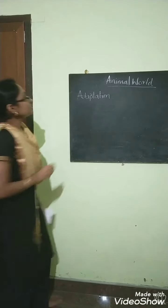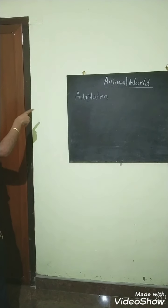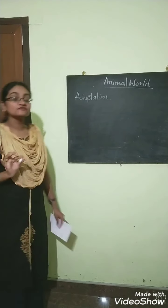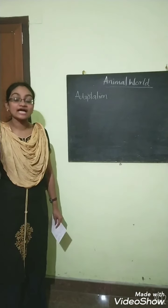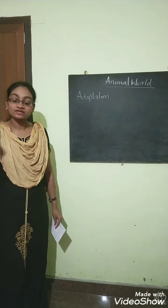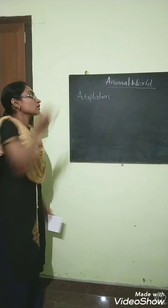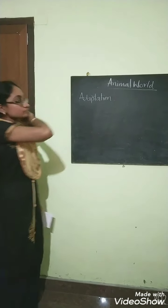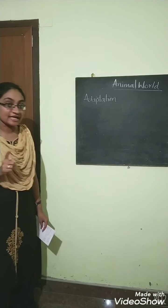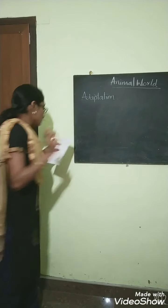So how can we define this term adaptation? We have already learned — it is the special features of an animal to survive in a particular region or habitat. That is called adaptation. Today we are going to explain the first adaptation, which is body covering.